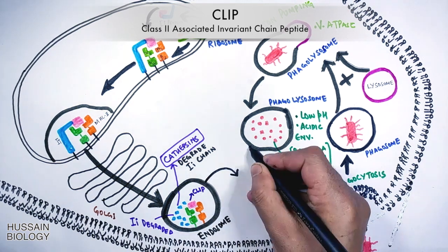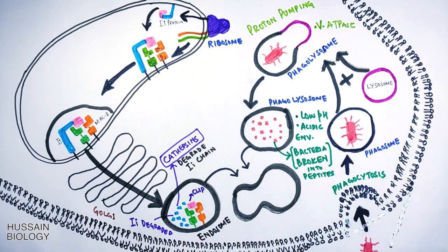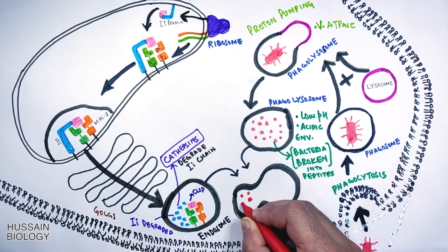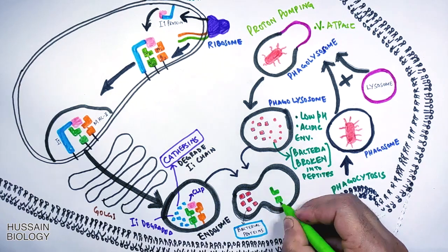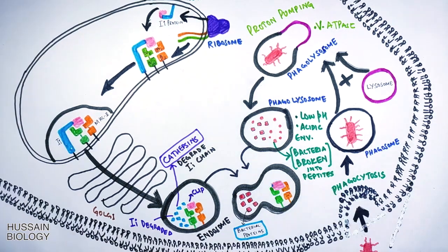Now after that the endosome fuses with phagolysosome. The phagolysosome has bacterial antigen in it. Now after fusion we need to load this antigen or bacterial antigens on MHC-II groove. But we still have this CLIP bound to the MHC-II groove.